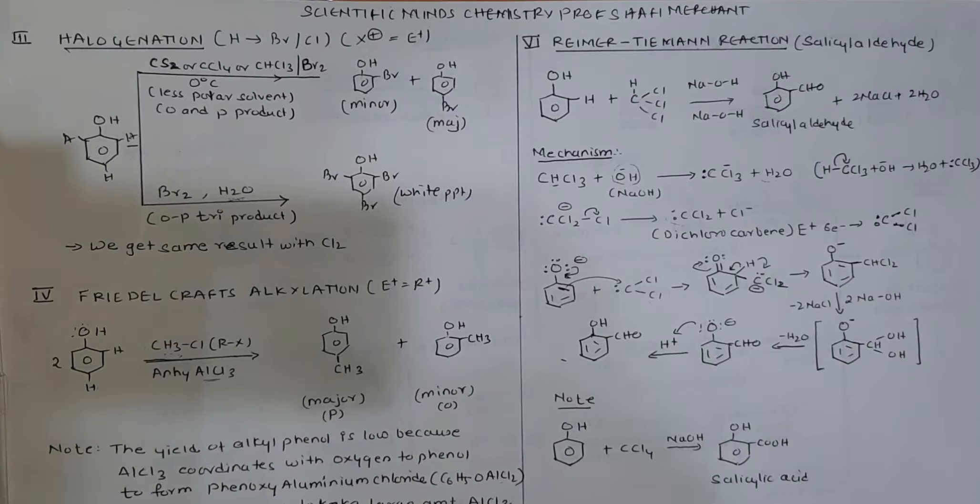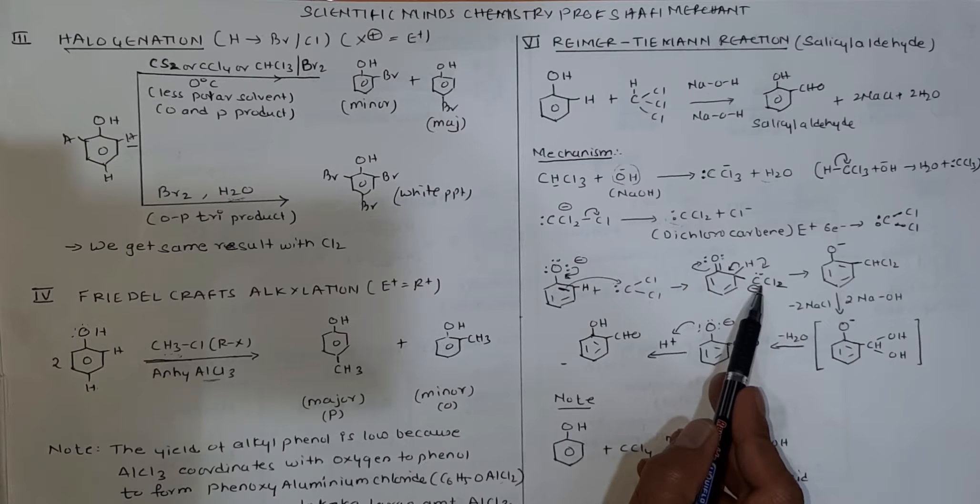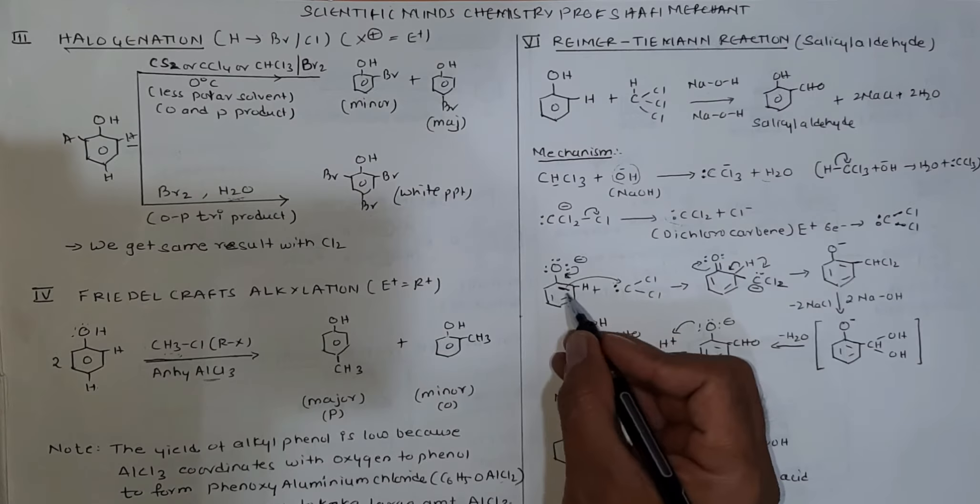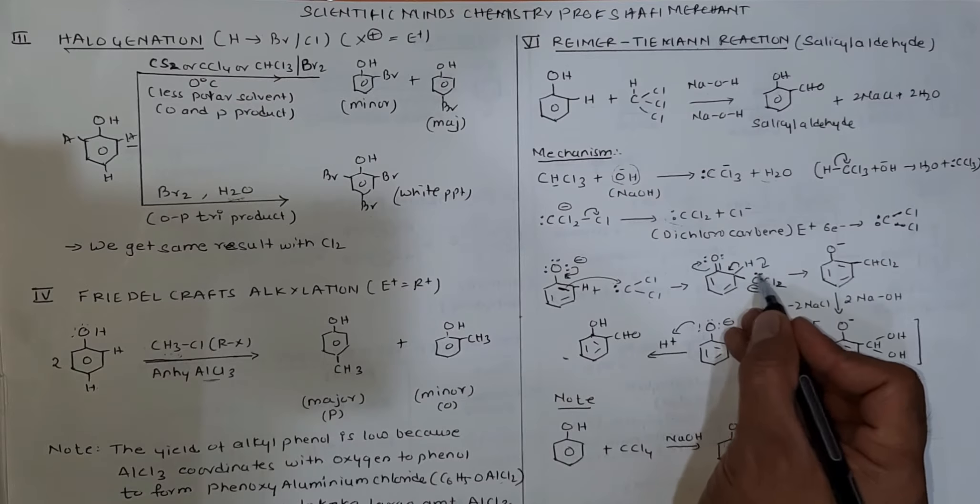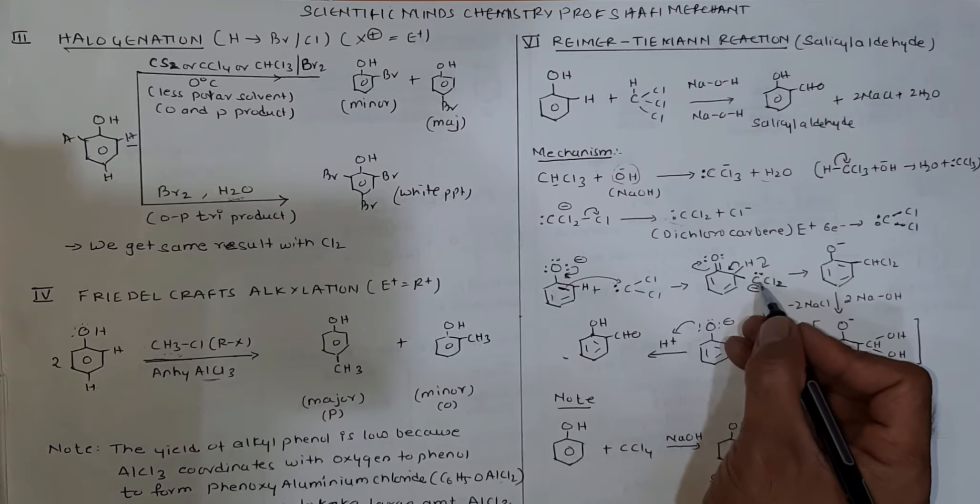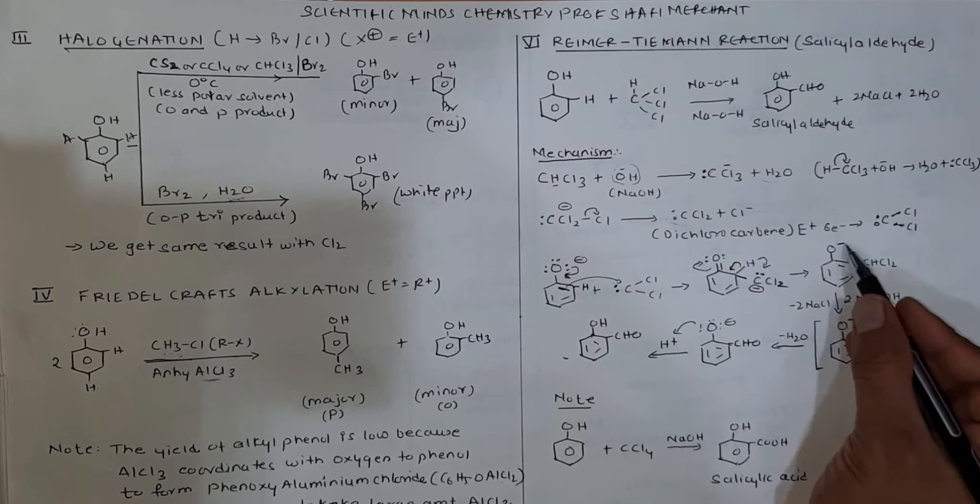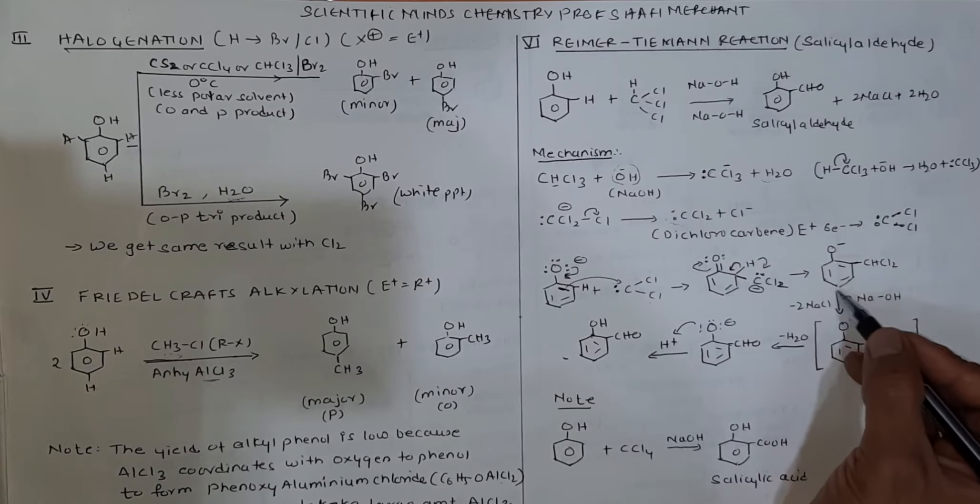In case of phenol, which is in phenoxide form because you have a base, it will attract this H+ to form phenoxide ion. Then dichlorocarbene attacks to form CHCl2 attached to the ortho position, and O- phenoxide ions are formed.